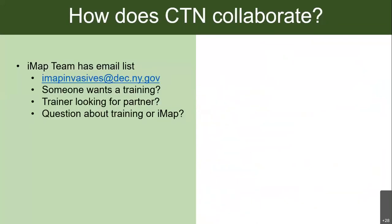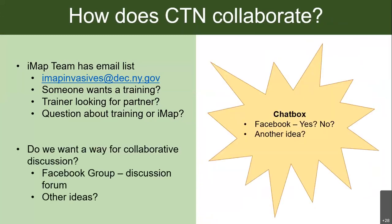One thing to think about is how the Certified Trainers Network collaborates. We have trainers across New York State who know how to train people on IMAP Invasives. Right now I have a list of emails and everyone on the CTN has my email — if anyone's looking for a training or training partner, or has a question, they email me and I can address it or send it out to the network. We've been wondering if there's a better way to collaborate. One idea is a Facebook group that could serve as a discussion forum so you can post things out to the network yourselves. We're open to other ideas — enter in the chat box whether you'd use Facebook or if you have other suggestions.